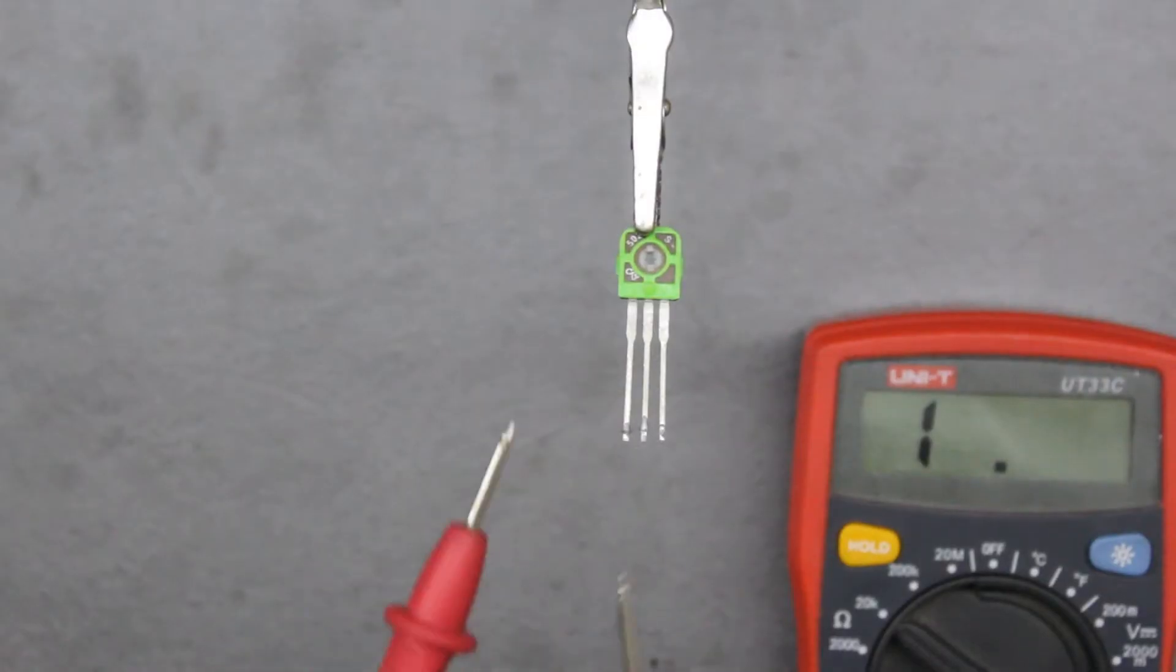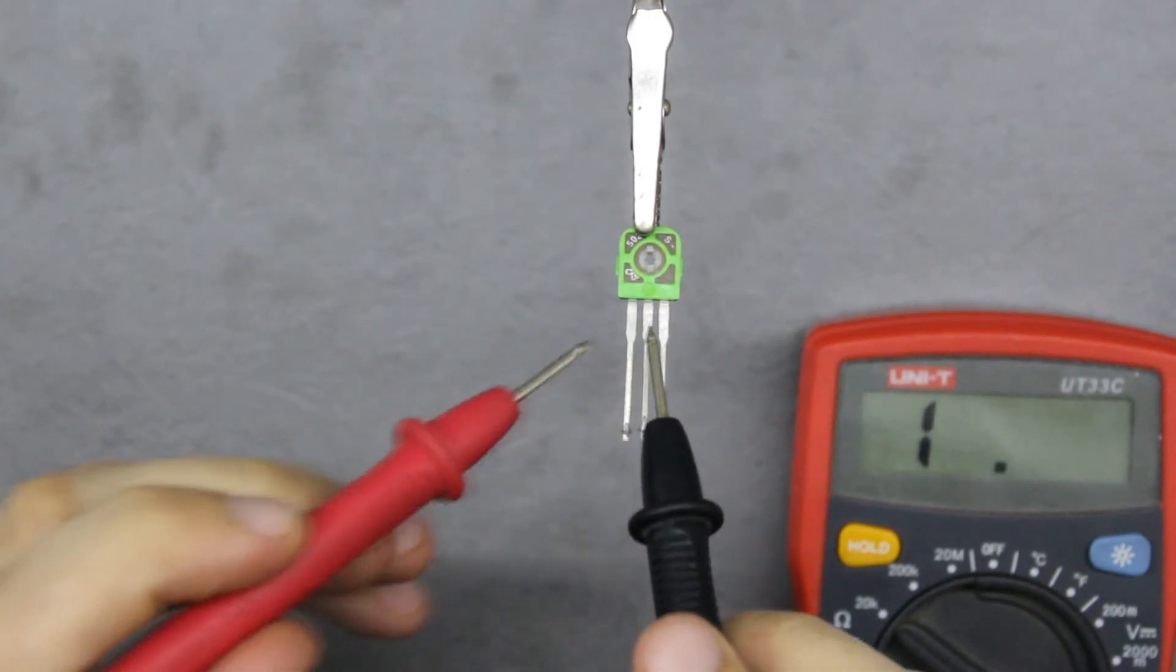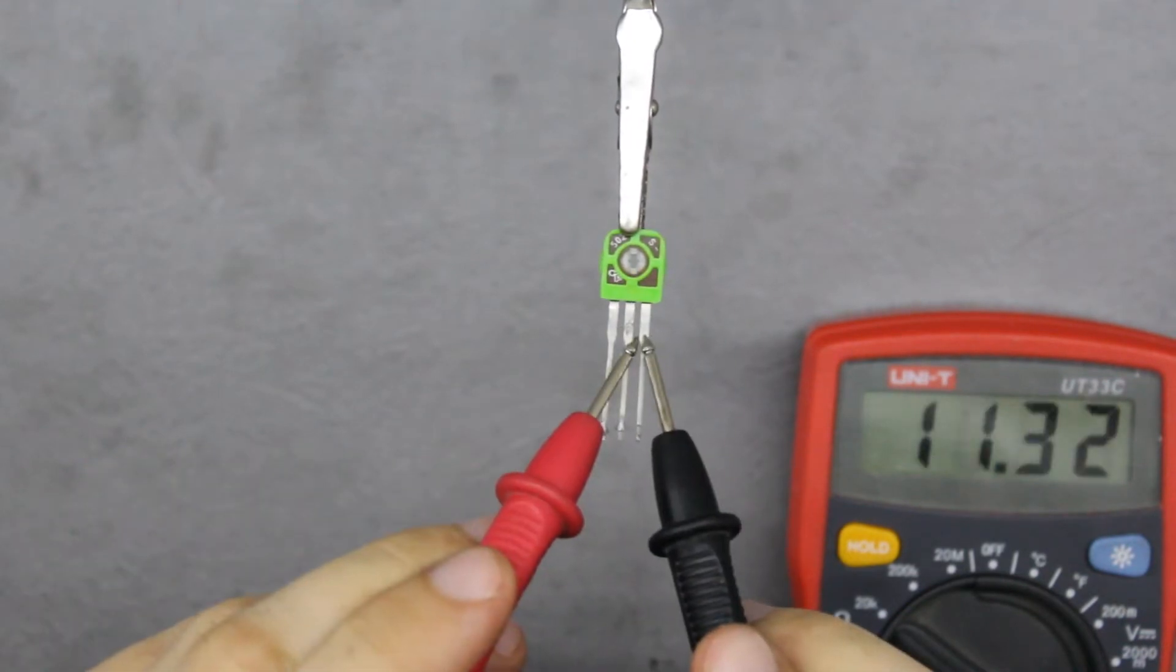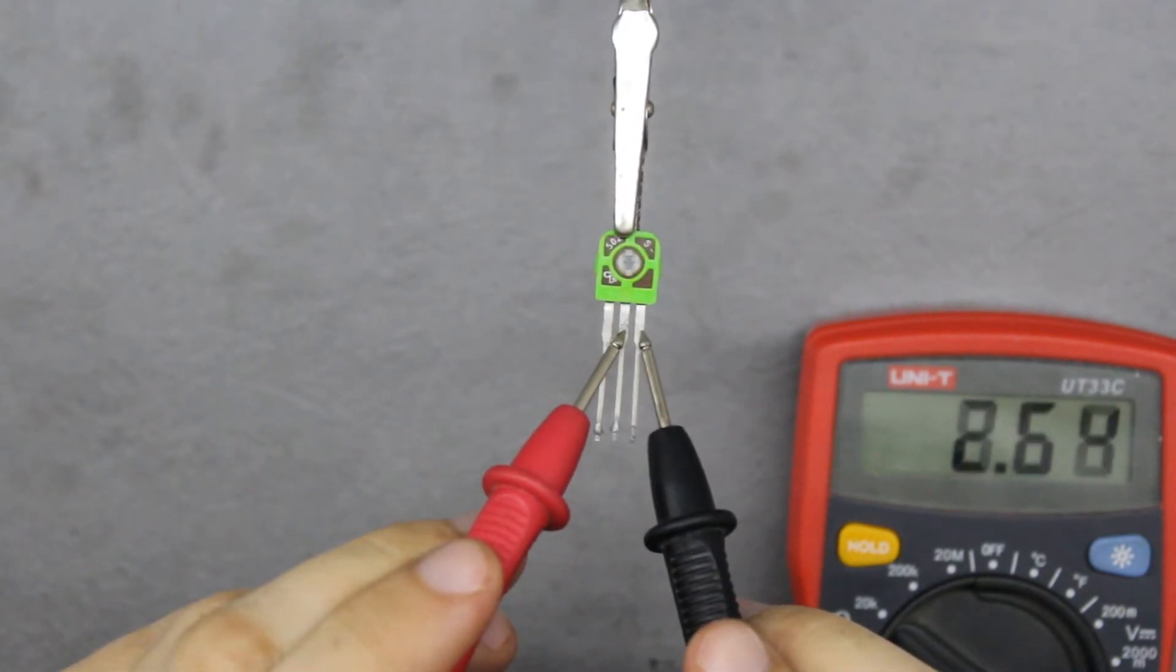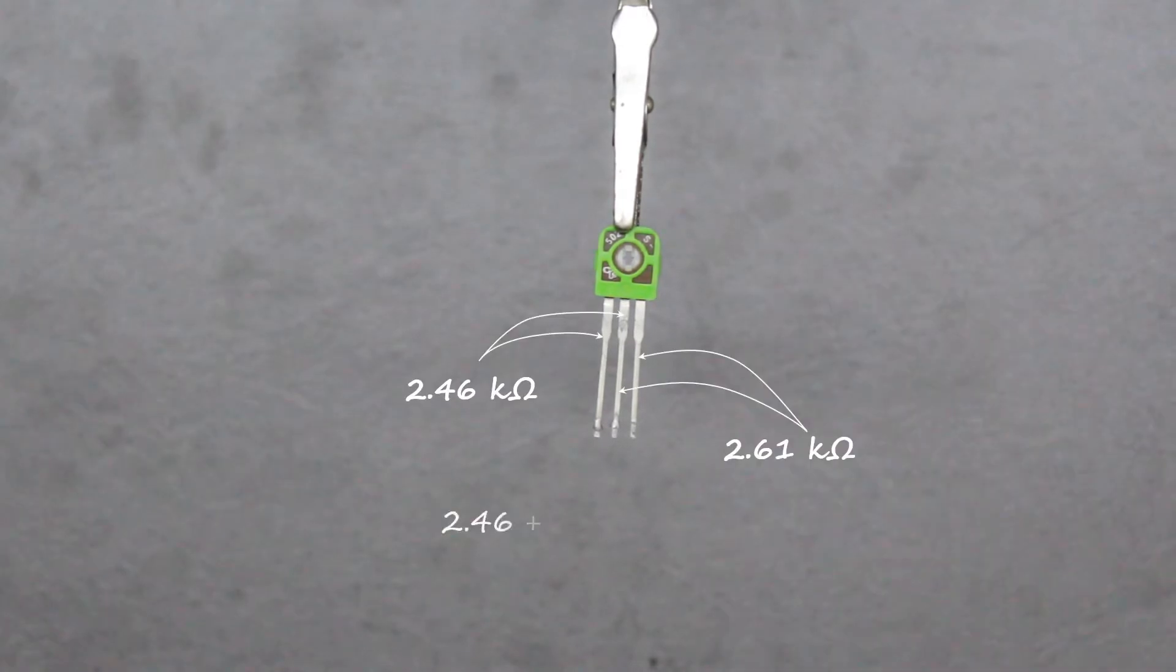The resistance of the potentiometer must be measured to select the right value of replacement resistors. In my case I measured 2.46 kilo ohms between first and second output pins and 2.61 kilo ohms between second and third pins. In total it's approximately 5 kilo ohms and divided by 2 we get 2.5 kilo ohms. So we must find resistors with a value of 2.5 kilo ohms or higher as a replacement for the potentiometer.